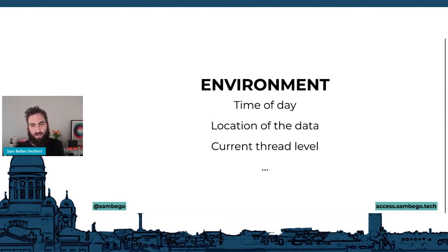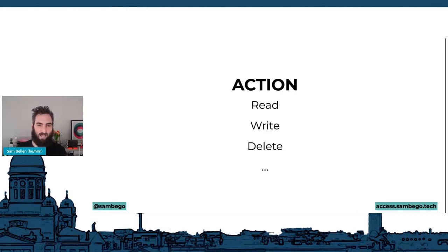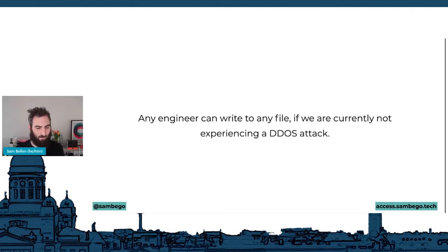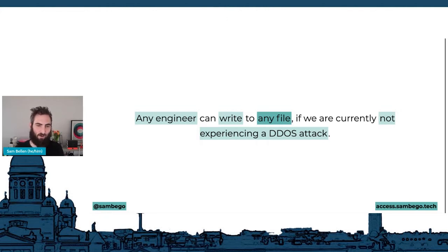A user attribute relates to the user — their role, job, organization membership, or security clearance. An environment attribute relates to the broader environment: time of day, location of data, or the current threat level — for example, whether your organization is under a DDoS attack. A resource attribute covers everything related to the actual resource: when it was created, who owns it, whether the data is sensitive. An action attribute describes what you want to do — read, write, delete, and so on.